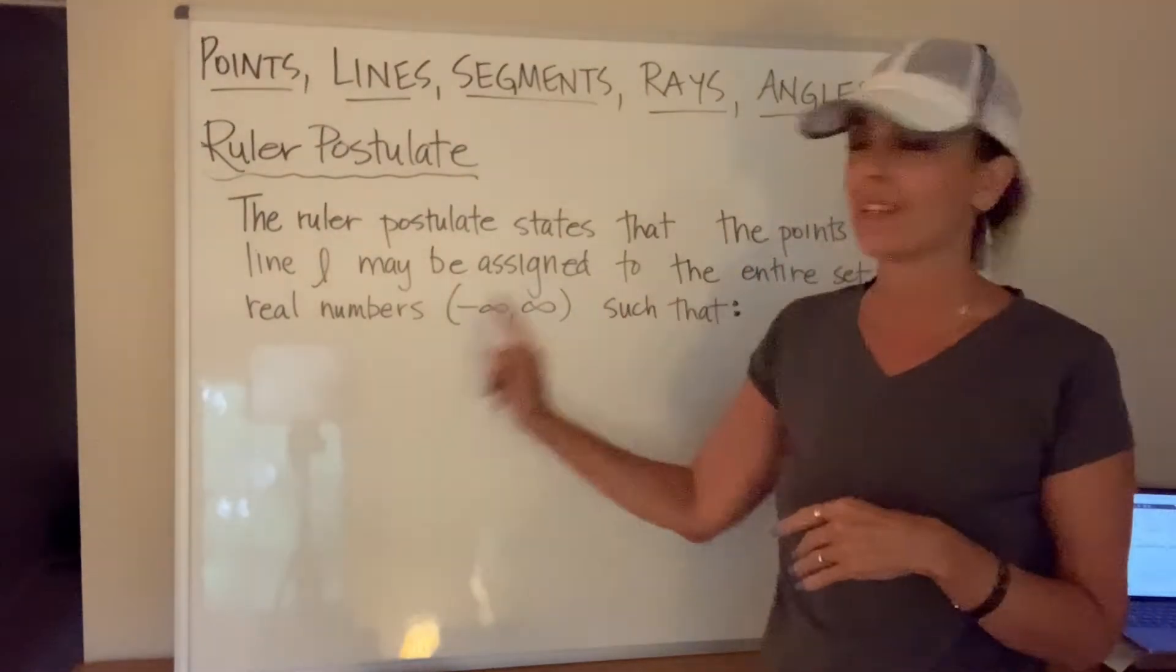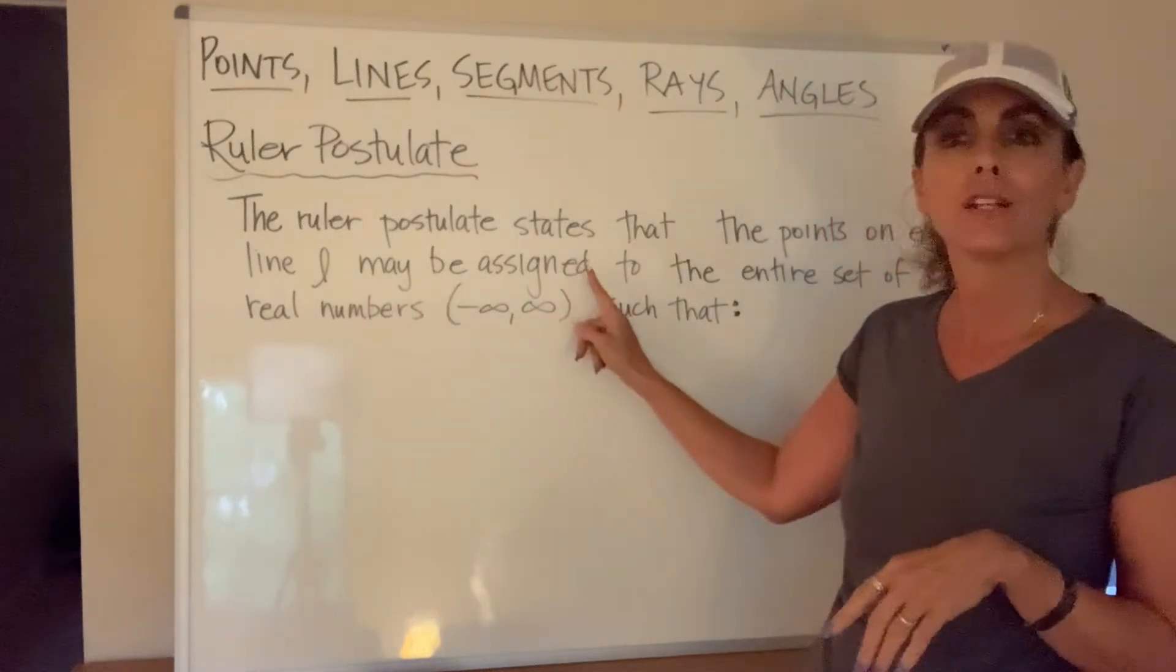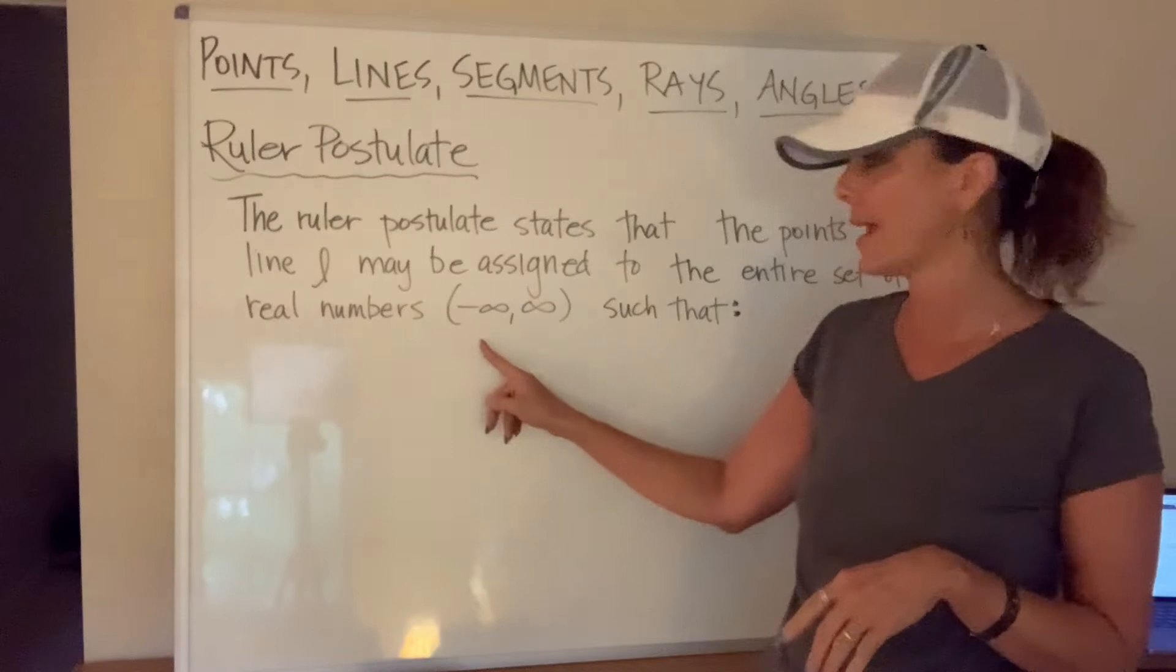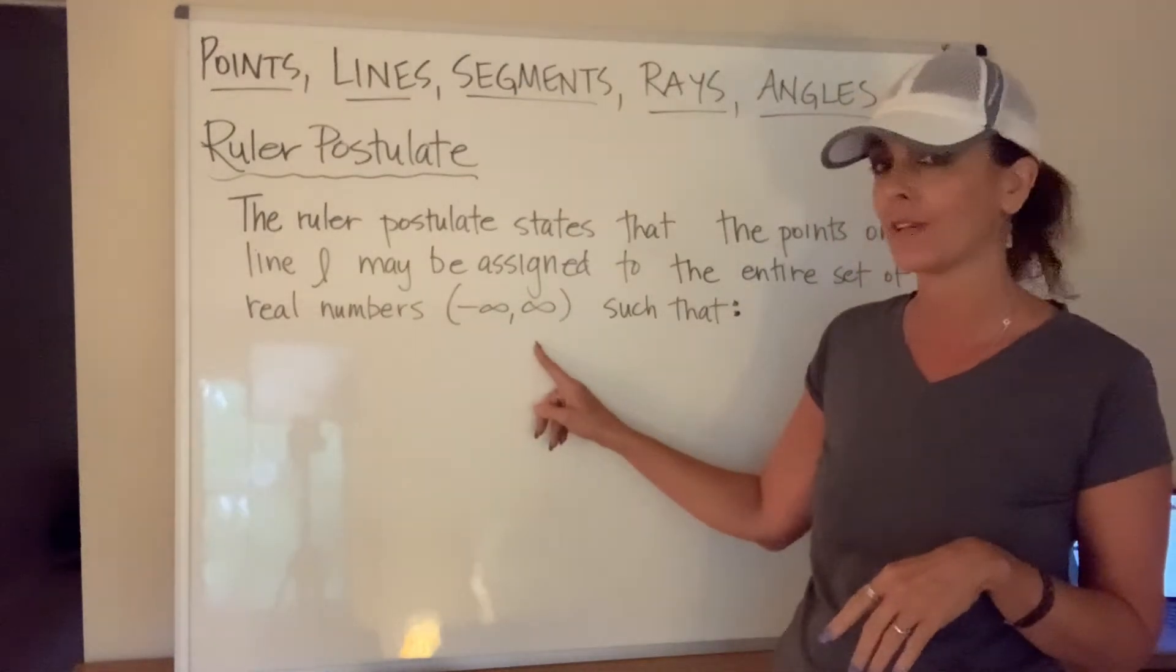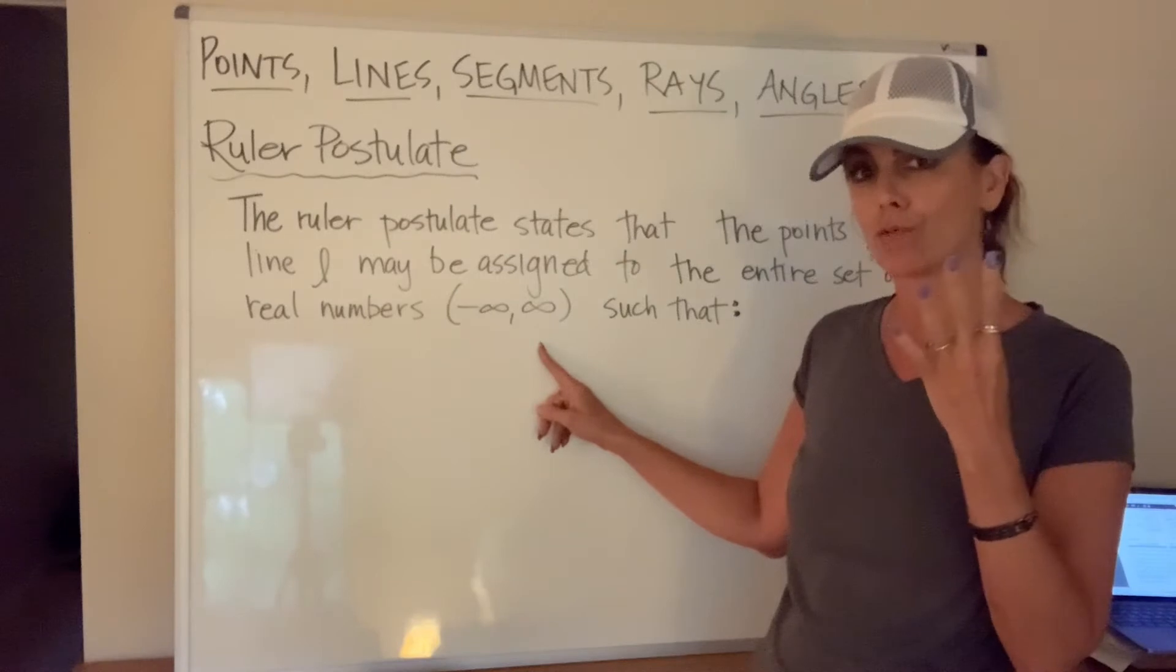The points on each line L, any line, may be assigned to the entire set of real numbers, negative infinity to positive infinity, such that the following four things are true. Here we go.